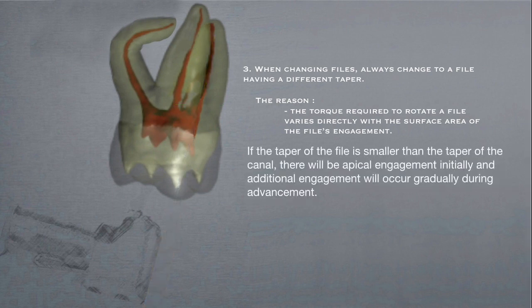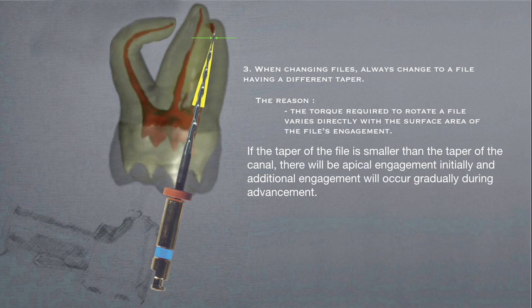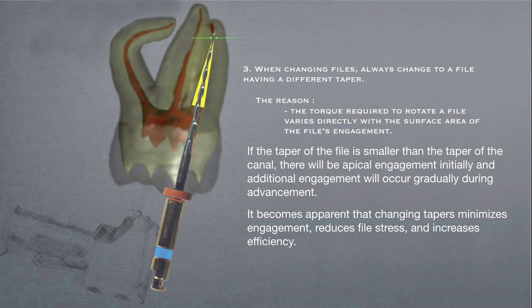If the taper of the file is smaller than the taper of the canal, there will be apical engagement initially, and additional engagement will occur gradually during advancement. It becomes apparent that changing tapers minimizes engagement, reduces file stress, and increases efficiency.